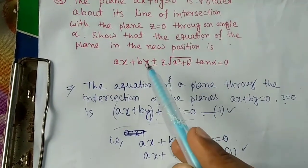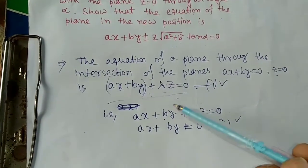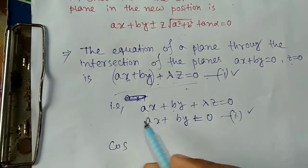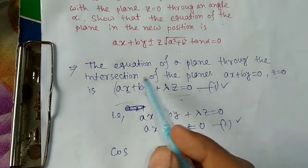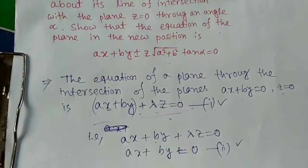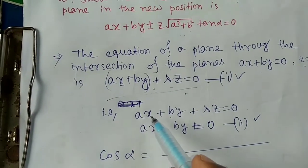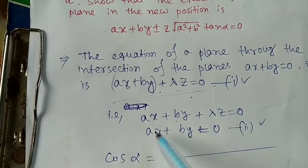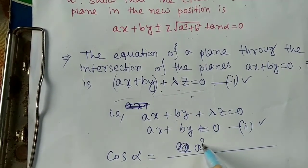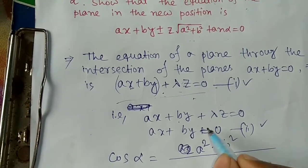We know that if we have two planes, we can find the angle between them. Our formula is cos theta. The angle here is alpha, so we write cos alpha equals to the sum of products of corresponding coefficients. That gives us: a times a plus b times b plus lambda times 0, which is a squared plus b squared.